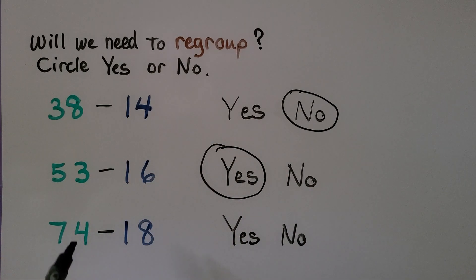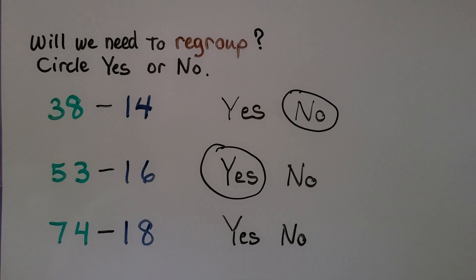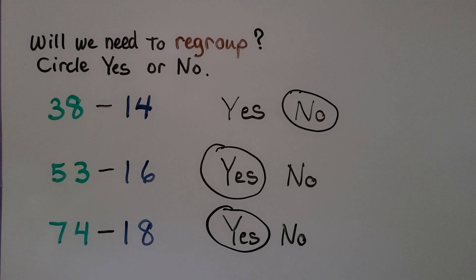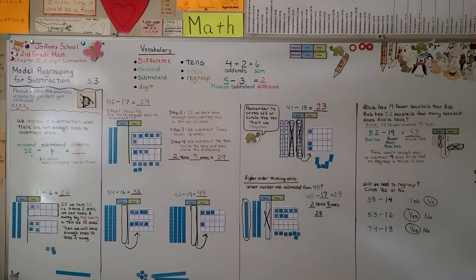74 minus 18. We look at the 1s place. We have 4 1s and need to take away 8 1s. There aren't enough 1s, so we would have to regroup from the 10s place — 1 10 would become 10 1s. So will we need to regroup? Yes. Remember when regrouping a 10 as 10 1s, cross it off or circle it so you remember it's not there anymore. Our next lesson, 5.4, we're going to continue learning about regrouping with subtraction and model 2-digit subtraction. Keep trying hard — I'm proud of you. Hope to see you next time. Bye!